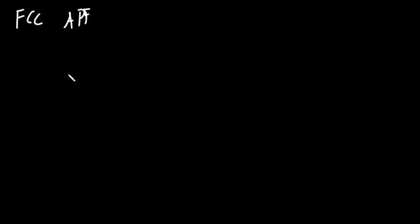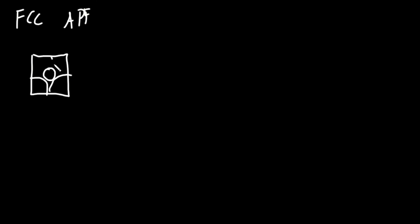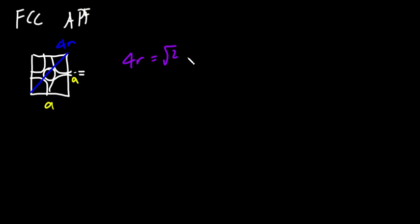For FCC, I'll consider one face of the cube. There's an atom in the center of the face and atoms at the corners. The diagonal of the face passes through the center atom touching two corner atoms, so that face diagonal equals 4r. Since the face diagonal is also √2·a, the relationship is 4r = √2·a, so a = 4r/√2 = 2√2·r.